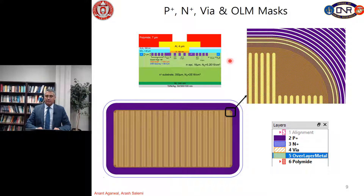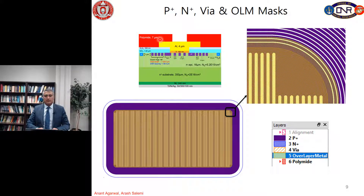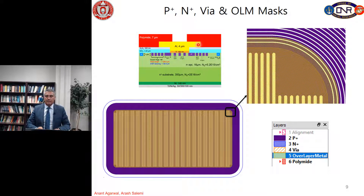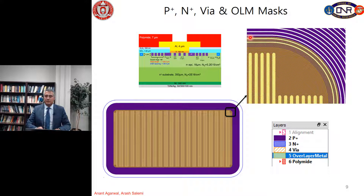Mask number 5 is the overlayer metallization. As discussed, we sputter aluminum and then by a proper mask we etch the periphery of the device in order to have the overlayer metallization only on the active area. The overlap I chose extends from the last P+ to the half of the second guard ring, as you can see here.